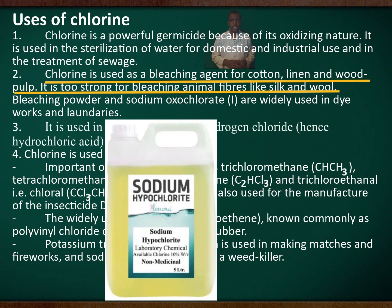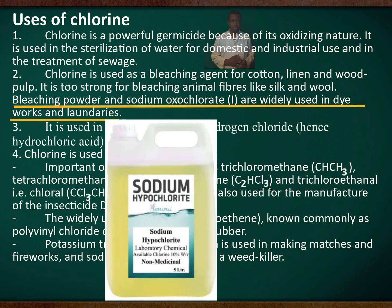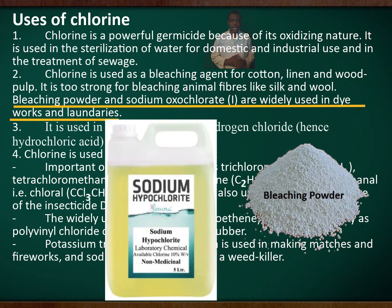Chlorine is used as a bleaching agent for cotton, linen, and wood pulp. It is too strong for bleaching animal fibers like silk and wool. Bleaching powder and sodium oxochlorite are widely used in dye works and laundries.